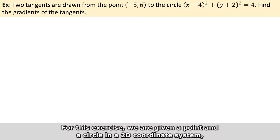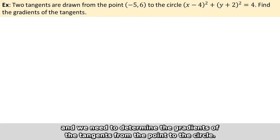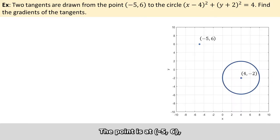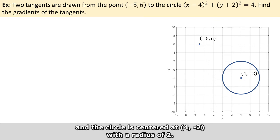For this exercise, we are given a point and a circle on the 2D coordinate system, and we need to determine the gradients of the two tangents from the point to the circle. The point is at a given coordinate, and the circle is centered at a given point with a radius of 2.